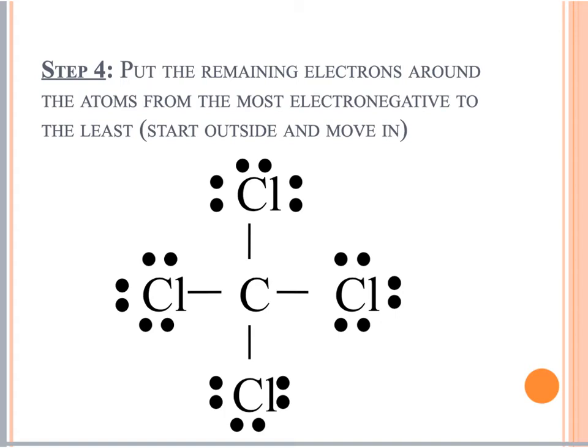If the electrons are bonded, we use a line; if they are free or unpaired, we use dots. The total should equal the total number of valence electrons calculated at the beginning. Remember, each line is worth two. You add double dots going around using the octet rule, which says all atoms want eight electrons.